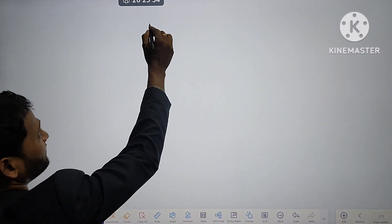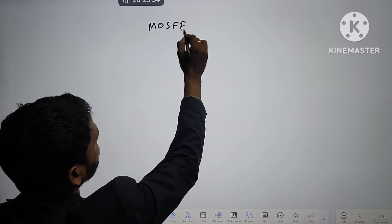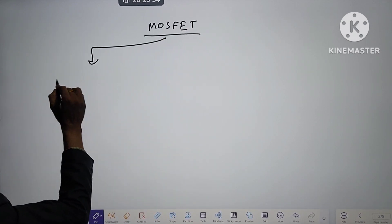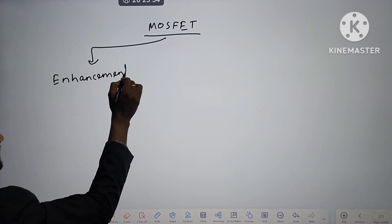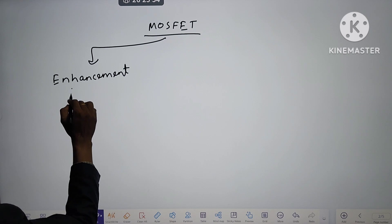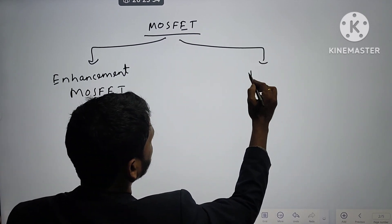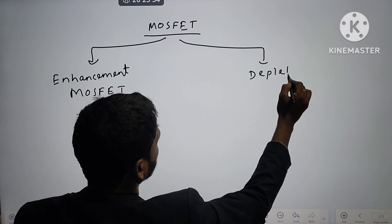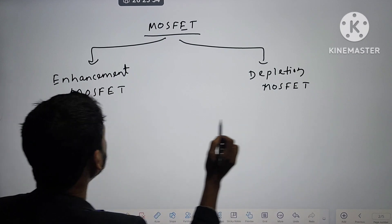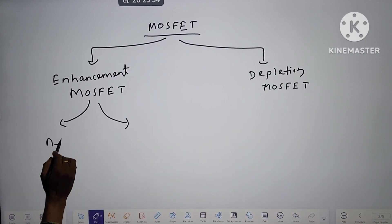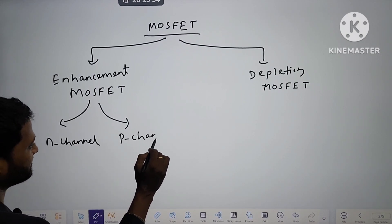As I have told in my previous class, MOSFET stands for Metal Oxide Semiconductor Field Effect Transistor. MOSFETs are of two types: one is enhancement MOSFET and second is depletion MOSFET. Enhancement MOSFET are further two types — one is N-channel enhancement MOSFET and second is P-channel enhancement MOSFET.